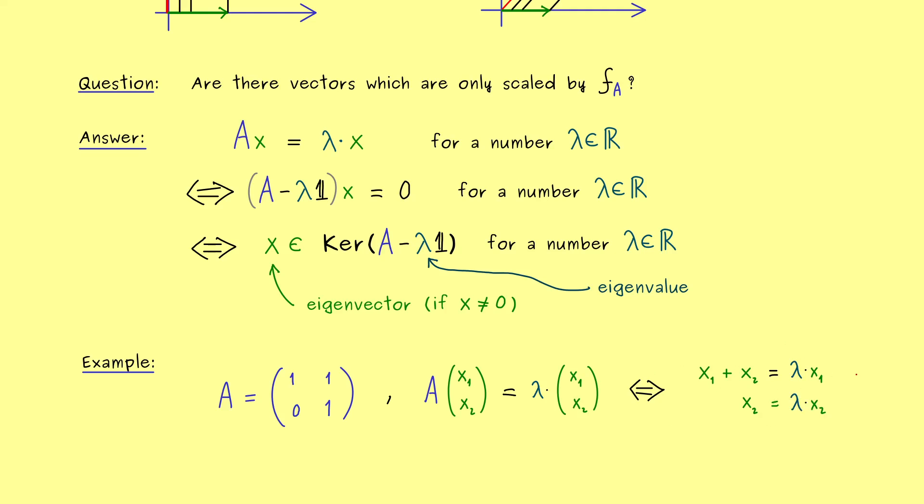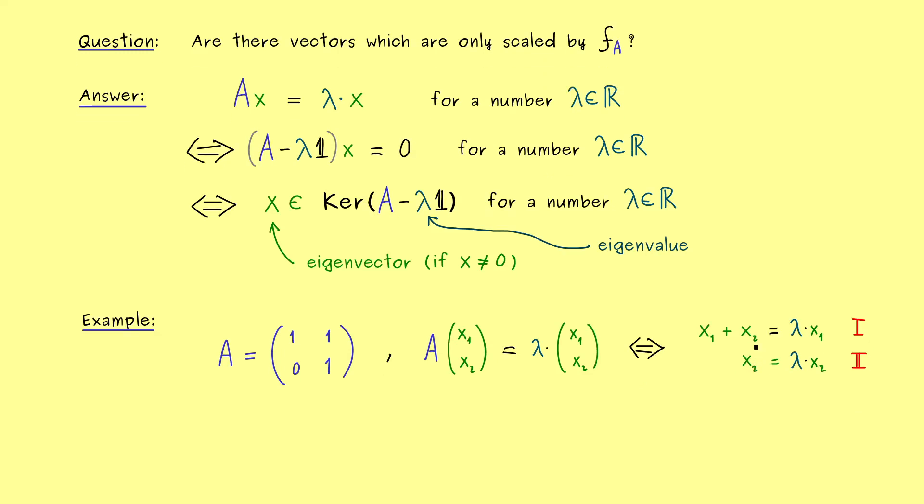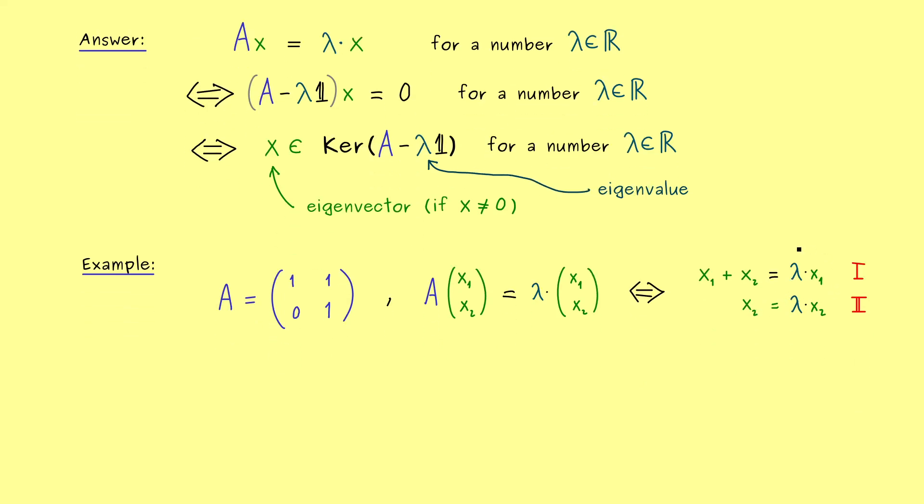So we see, we have two equations, but three unknowns. We want to find the two components and the scaling factor lambda. However, we also recognize this is not a linear system, because we have the product of two unknowns here. Therefore, we have to do a little bit more before we can apply our linear solving algorithms.